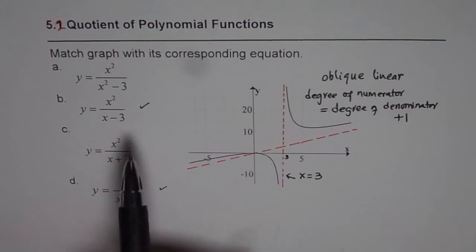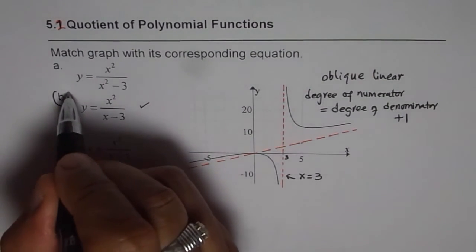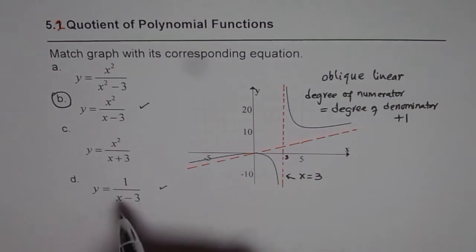In this case, it is 1 higher and therefore, this seems to be the right option. In this case, the degree of numerator is lower. So, that cannot be the option. So, B is the right option for us.